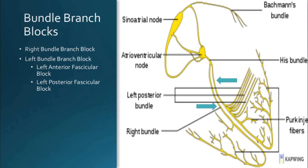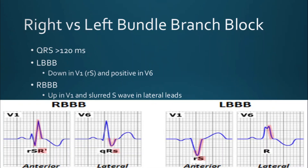Now we'll talk about bundle branch blocks. There are two bundle branches: left and right. To make things more difficult, the left bundle has two fascicles — the left anterior fascicle, wrapping around the front of the heart, and the left posterior fascicle, wrapping around the back. In a bundle branch block, the QRS will be widened in both — the QRS duration must be over 120 milliseconds. A left bundle branch block will have a negative QRS in V1 and a positive QRS in V6. A right bundle branch block will have a positive QRS in V1 and a slurred S wave in the lateral leads such as V6.